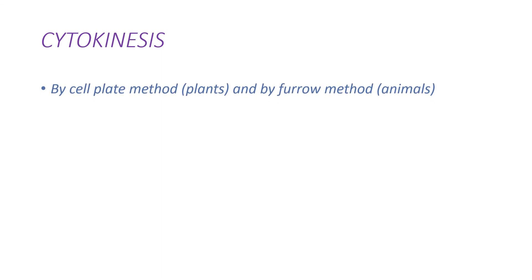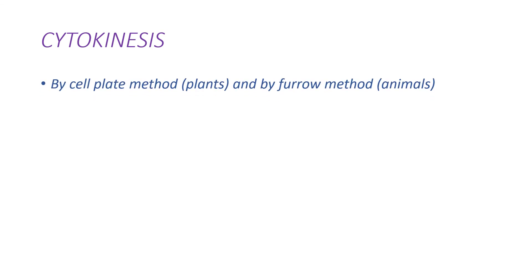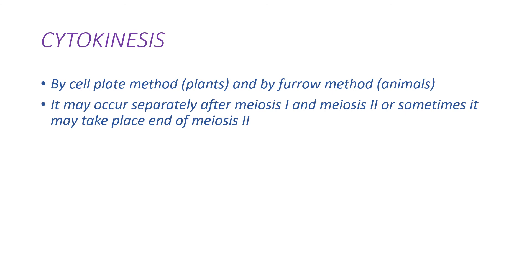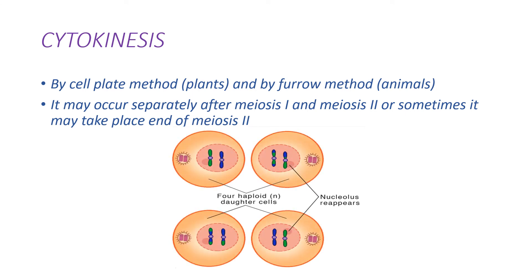Now the cytoplasm has to be divided — cytokinesis occurs by the cell plate method in plants and by the furrow method in animals. Cytokinesis occurs separately after meiosis I and meiosis II, or sometimes at the end of meiosis II. If cytokinesis doesn't occur after meiosis I, a dyad of cells forms. By the end of meiosis II cytokinesis, four haploid daughter cells are formed, completing the cycle of meiosis.